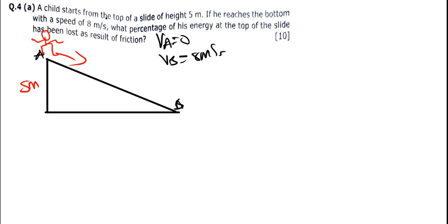I want to find the percentage of the energy which was being lost due to friction. I need first to find the initial mechanical energy and the final mechanical energy. The initial mechanical energy minus the final mechanical energy gives the energy lost due to friction. This is a non-conservative force — because of friction, some energy is going to be lost.